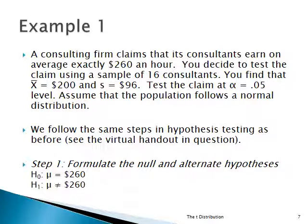Here's an example where you use t. A consulting firm claims their consultants earn exactly $260 an hour, and you want to test their claim, but you can only get a sample of 16 consultants. You find that the sample mean x-bar is $200, and s is $96. You want to test the claim at an alpha of 0.05 level, and we assume the population follows a normal distribution.